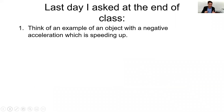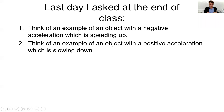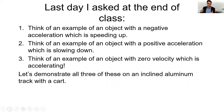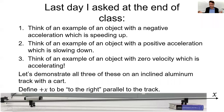At last class I asked you to think of three examples. One: an object with negative acceleration which is speeding up. Two: an object with positive acceleration which is slowing down. Three: an object with zero velocity which is accelerating. I'm going to turn the camera around and demonstrate all of these on the big Pasco track with a cart. Positive is defined as toward the right.